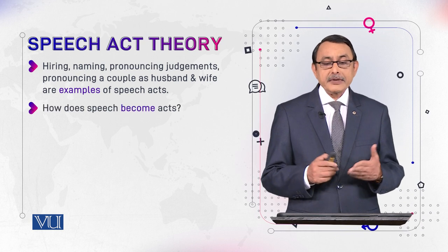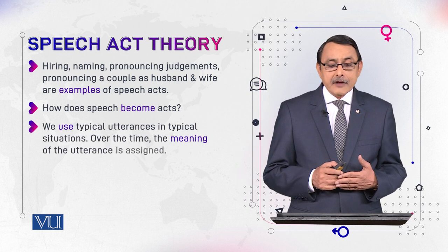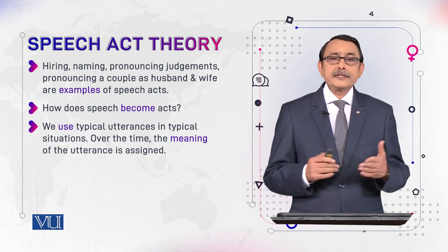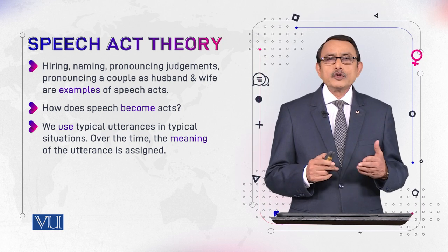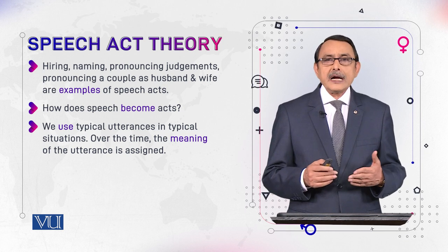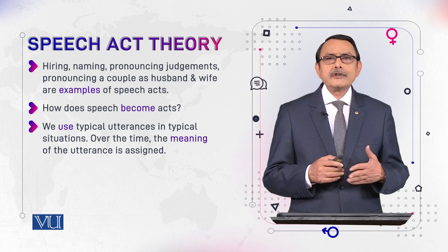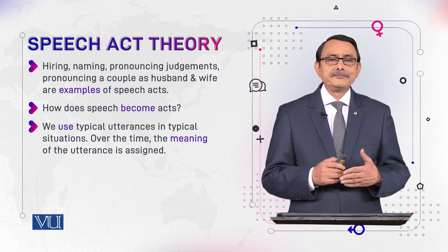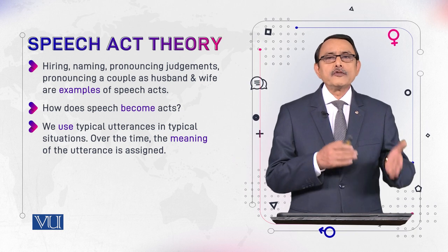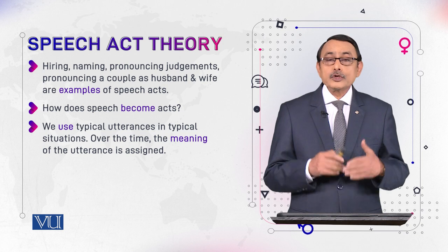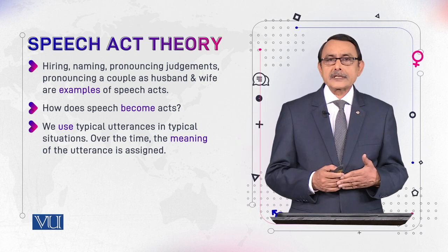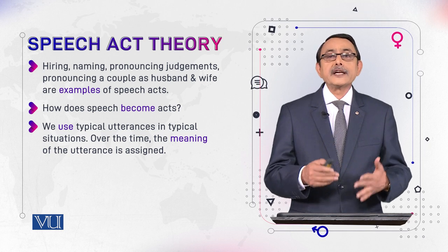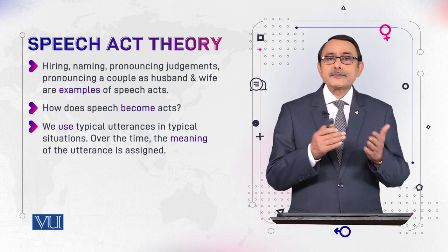How does speech become acts? We use typical utterances in typical situations. Whenever you promise, you use utterances like: I will help you, I will talk to him, I will recommend your name to that person. Such utterances, when used over time, are associated with the action of promising. So you use typical expressions in typical situations over a period of time and they relate your speech with certain acts, like the act of promising. This is how speech becomes acts.